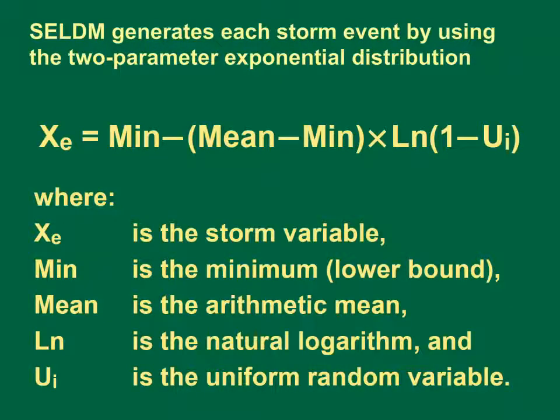In SELDM, each storm event variable is generated by using the minimum value and the mean value with the two-parameter exponential distribution as shown in the equation on this slide. SELDM uses a pseudo-random number generator to produce a series of uniform random numbers, designated as UI in the equation. It transforms the numbers into natural logarithms and adjusts these values by using the minimum and mean values to fit the input statistics.